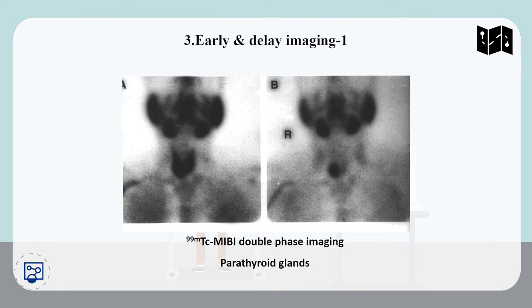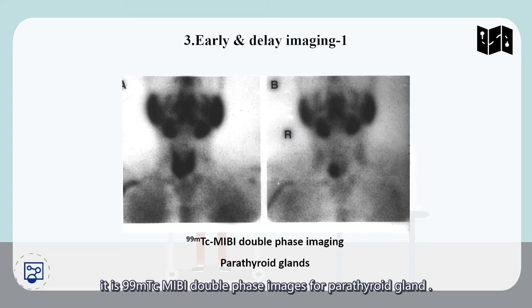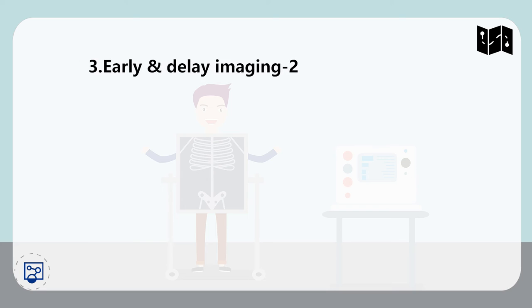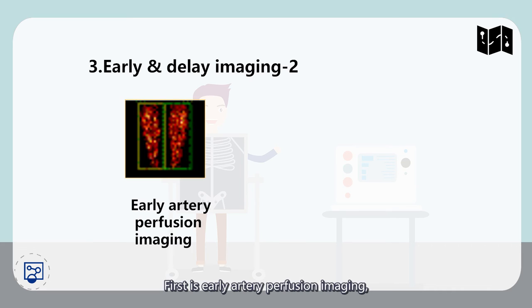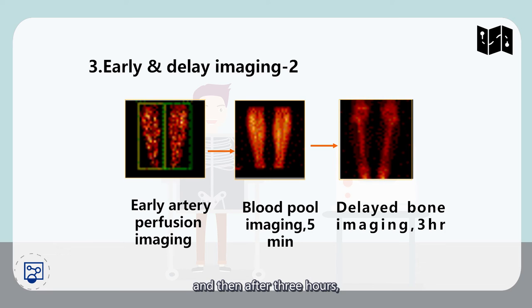The third classification is early and delay imaging. The left one is a 10-minute scanning and the right one is a 2-hours-later scanning. So Technetium-99m may be used for double phase imaging for parathyroid gland. It shows the legs: first is early artery perfusion imaging, then blood pool imaging after 5 minutes, and after 3 hours you may get the delayed bone imaging.